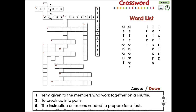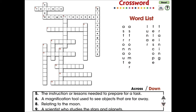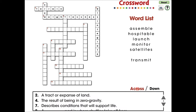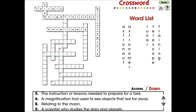Drag a word from the list to its correct position in the puzzle. Use the arrows to scroll through all the clues. Switch between across and down clues and words. Visit ccpinteractive.com for extended versions of our products and to watch more demo videos.